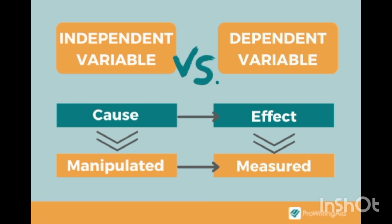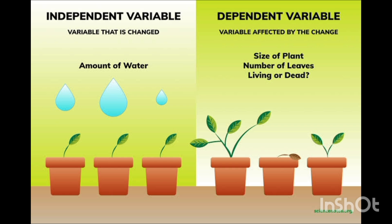The cause can be manipulated but the effect can only be measured. Independent variables are like a cause and you can manipulate the cause, but you cannot manipulate the effect — it is always measured. In our daily life we can manipulate independent variables but we can only measure dependent variables.